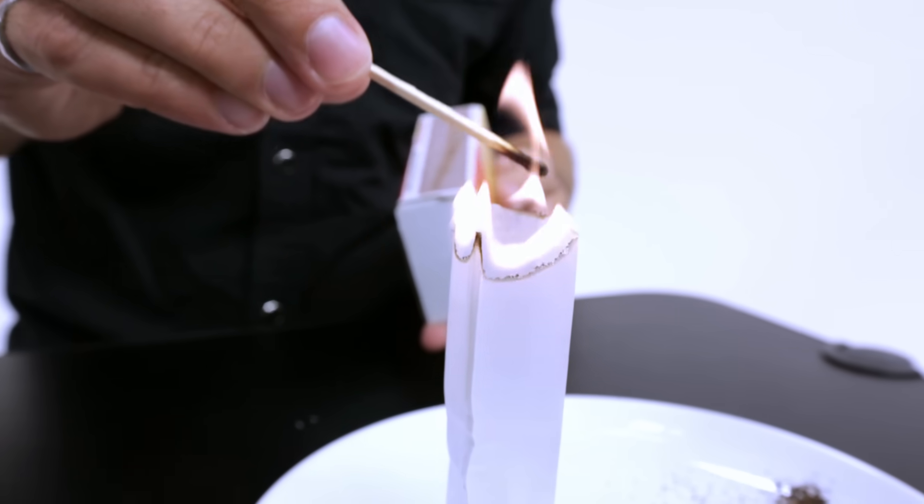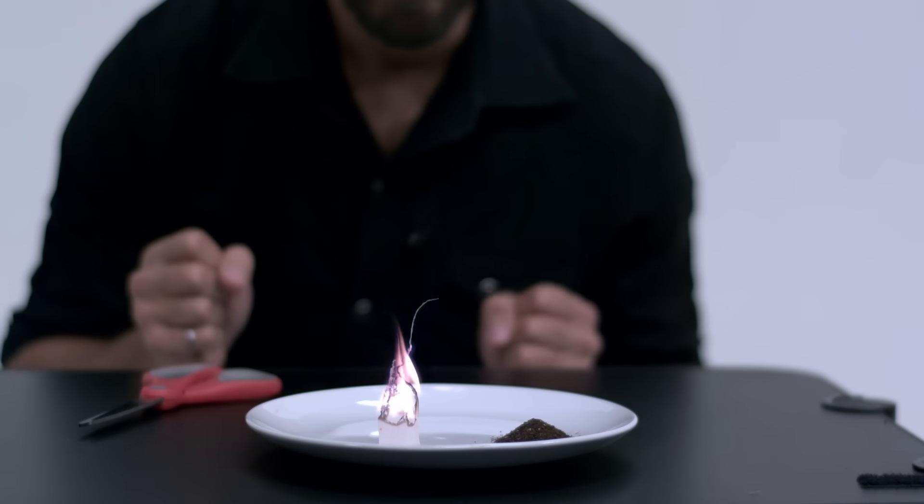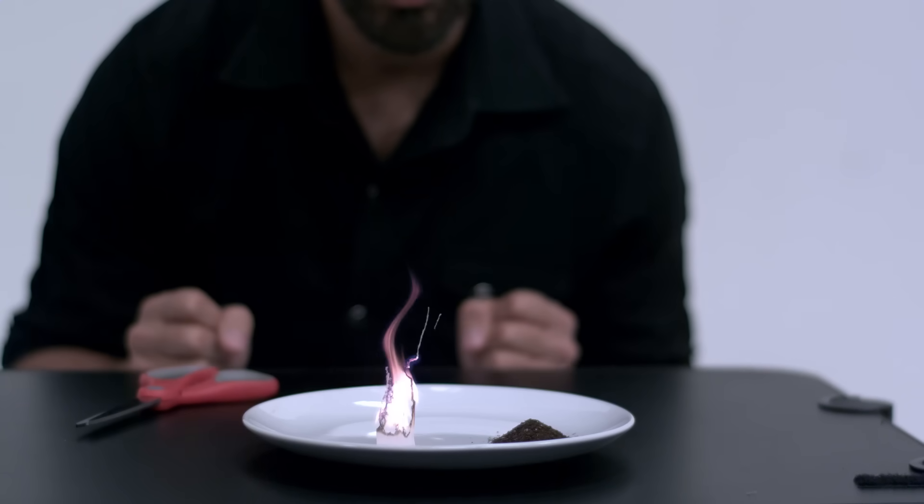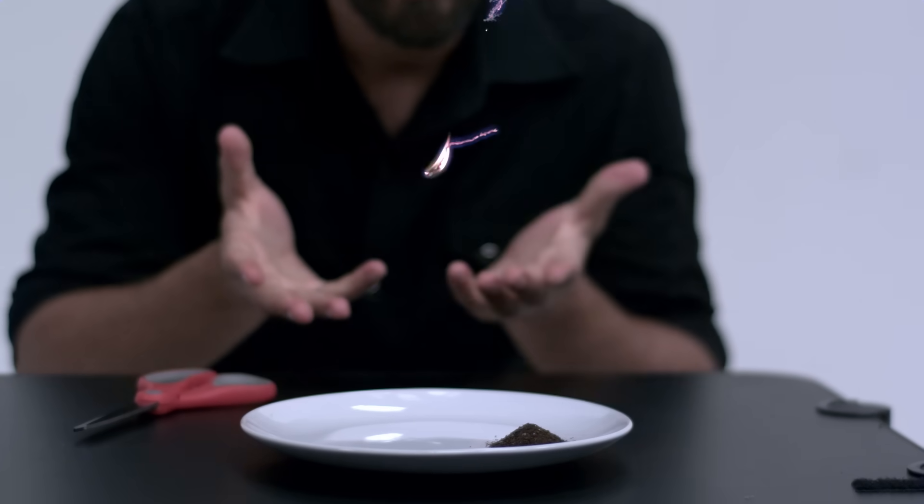In the teabag rocket, we showed that if you light a teabag on fire from the top, it will actually take off into the air. That happens because as the teabag is burning, all the air inside it heats up and so it expands, so it gets less dense and it's pushed up by all the cooler air around it.